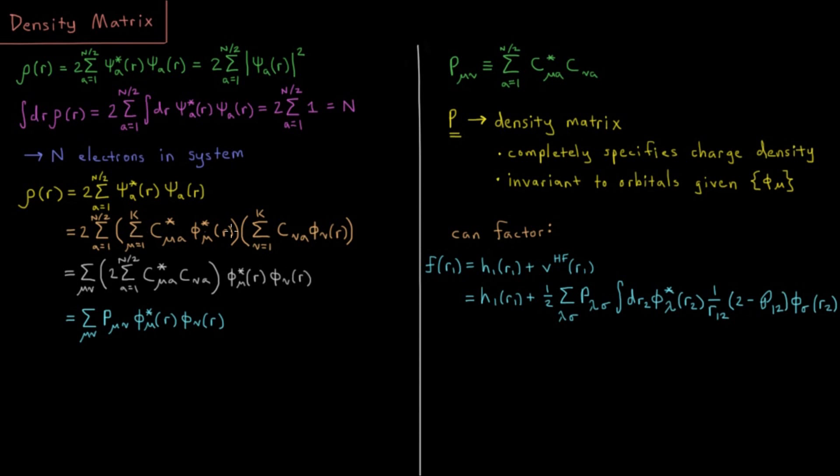Each of those is summed from 1 to k for all of the basis functions. We can factor out those sums in any order. We can do a double sum over mu and nu of twice the sum from a equals 1 to n over 2 of c star mu a times c nu a times phi star mu times phi nu, the overlap of those two basis functions times the sum over these elements in the coefficient matrix doubled for spin up and spin down.